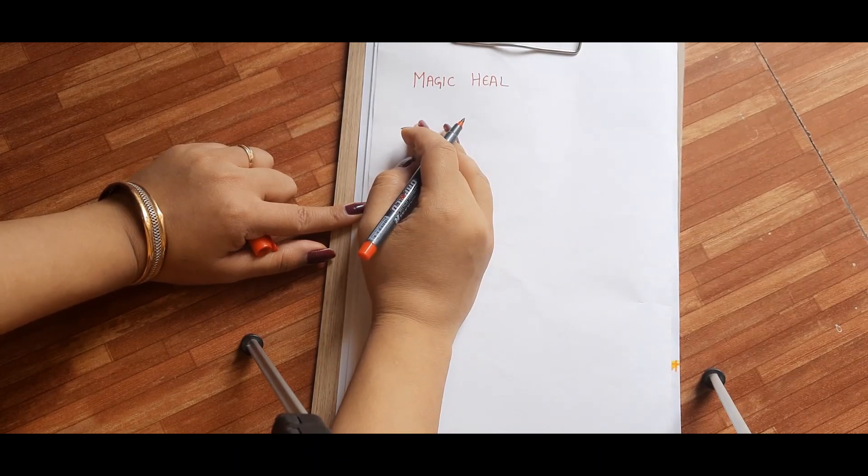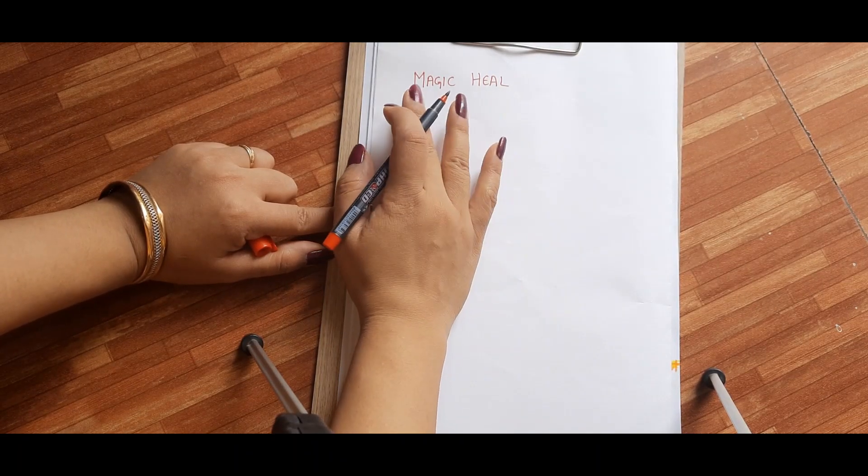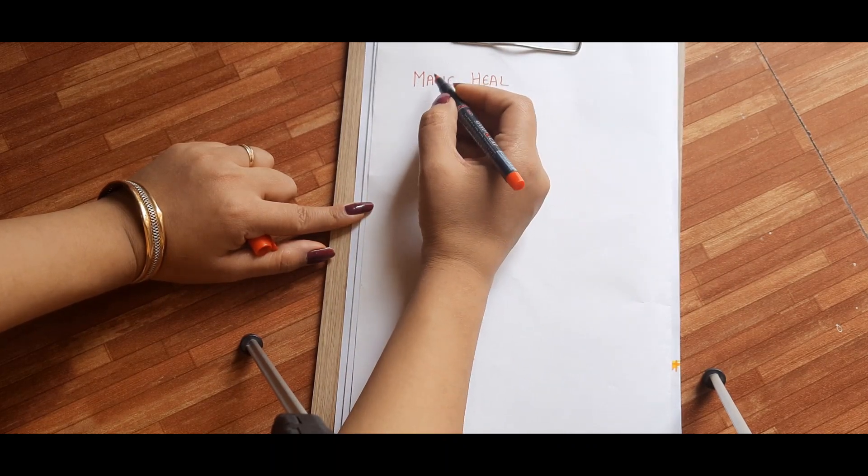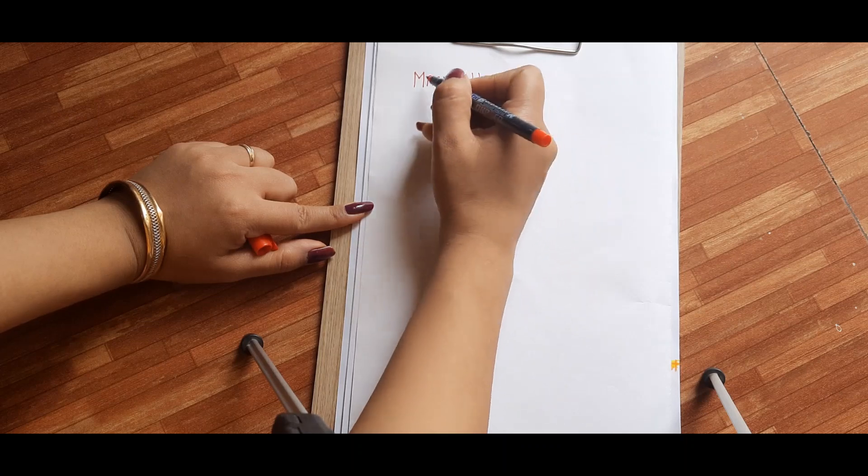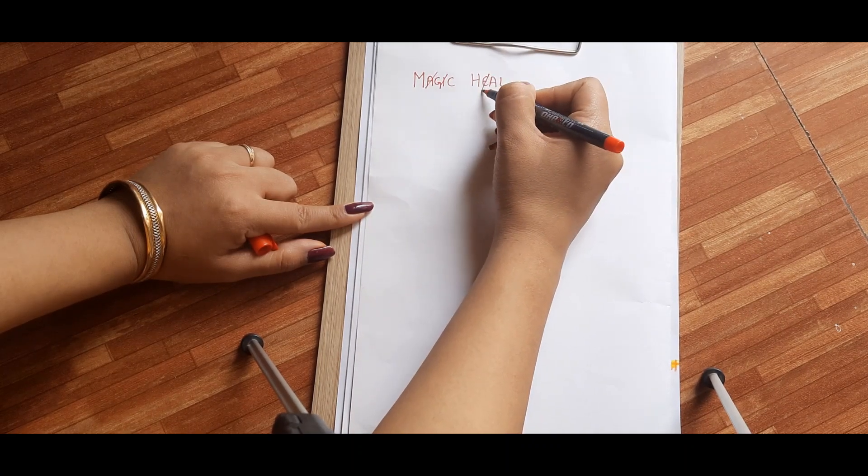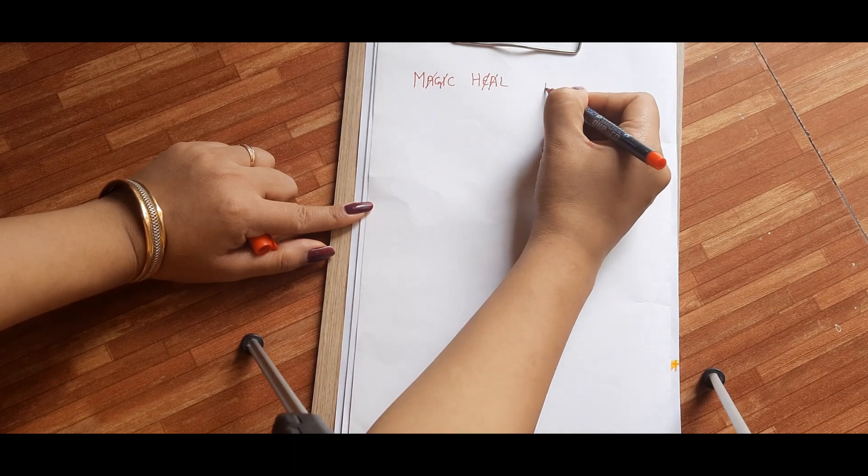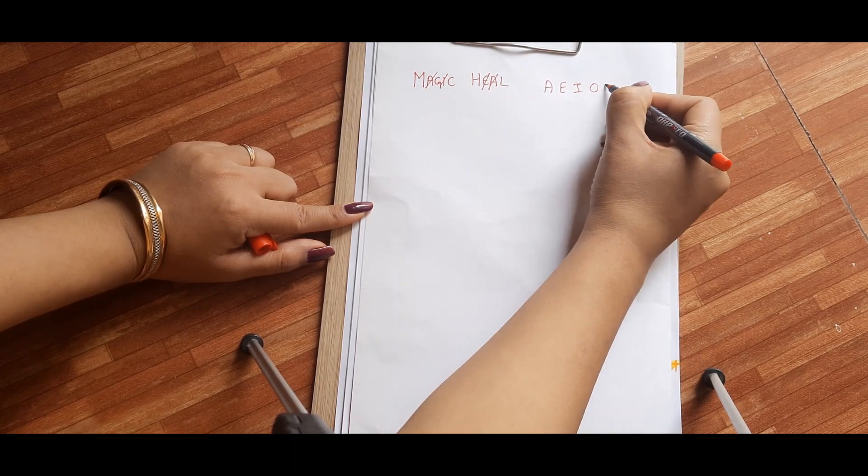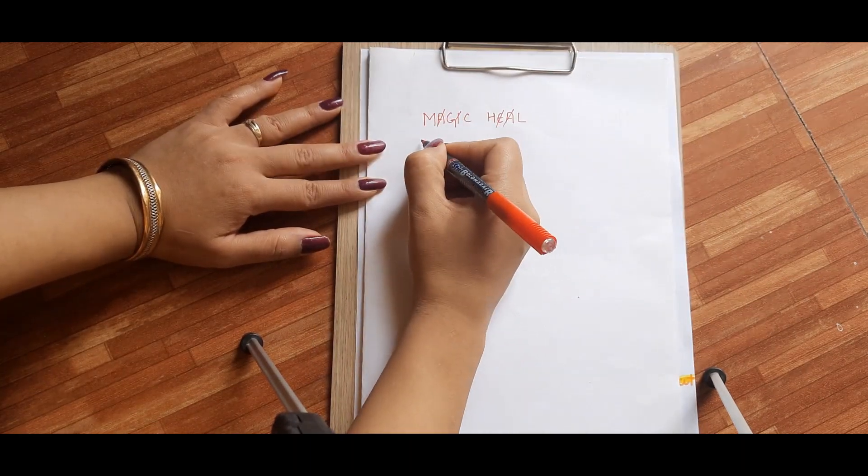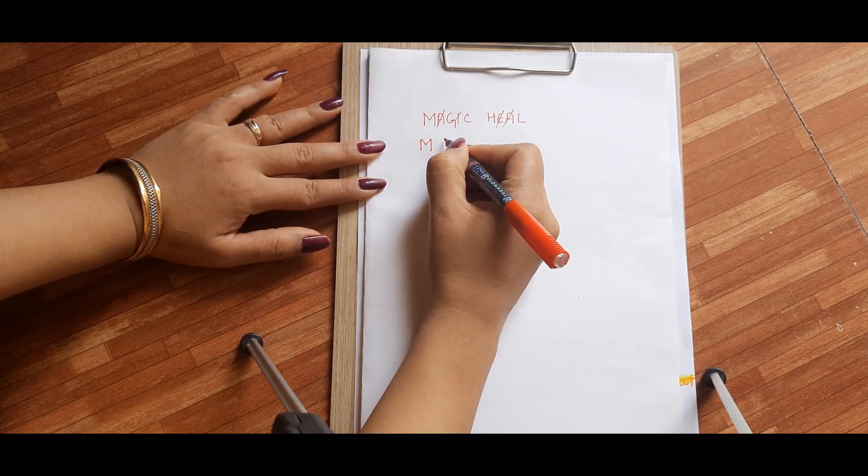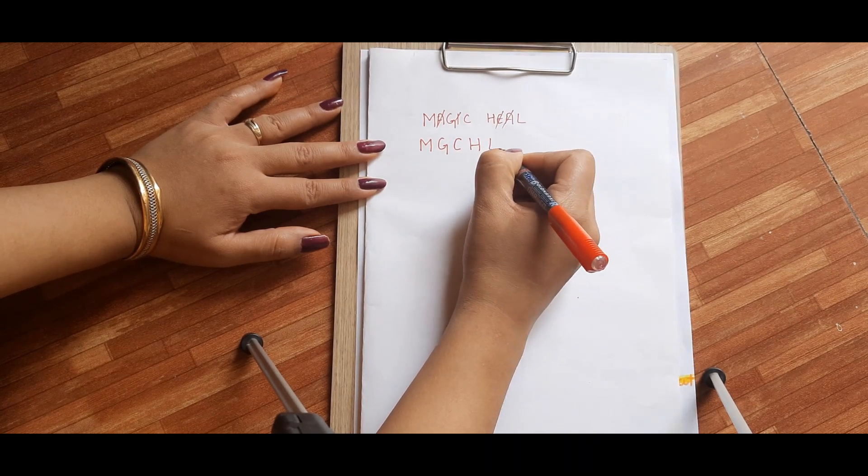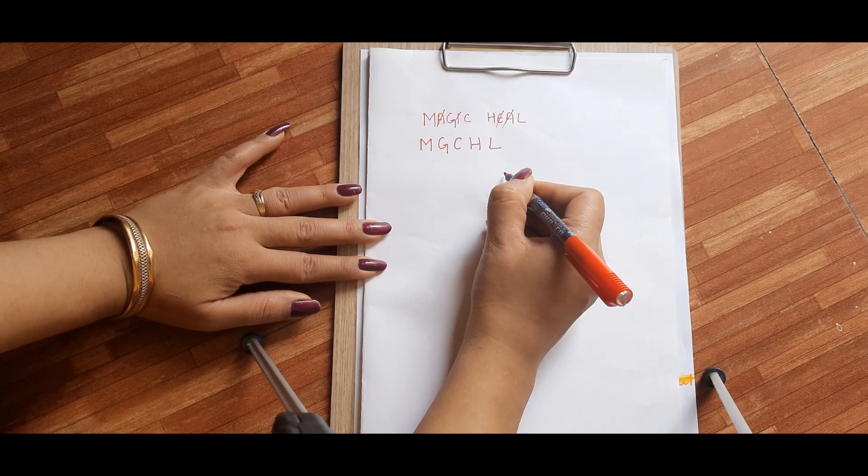So let's see how to create a sigil. I have taken an example of Magic Heal. So what we will do in it? We will remove all the vowels. It means cut the vowels. Vowels means A, E, I, O, U. Cut them all. So after cutting vowels, the alphabets left are M, G, C, H, L. Right? So now, we will create a circle.